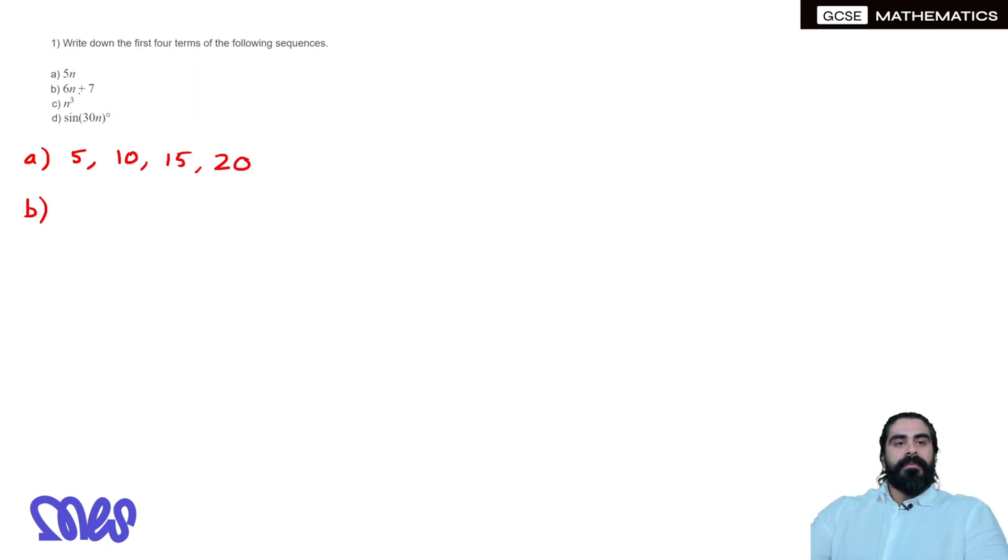For part B, when n is 1, we're going to have 6 times 1 plus 7, that's 6 plus 7 which is 13, then 6 times 2 plus 7 for the second term, 12 plus 7 is 19, then subbing in 3, we're going to get 25, subbing in 4, we're going to get 31. So those are your first four terms of the sequence.